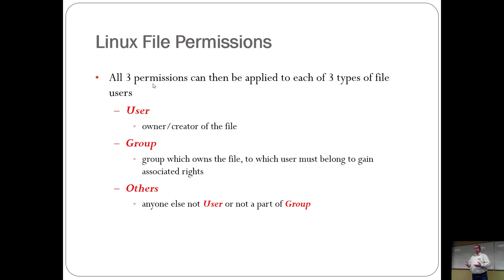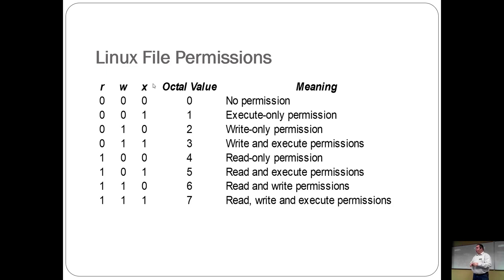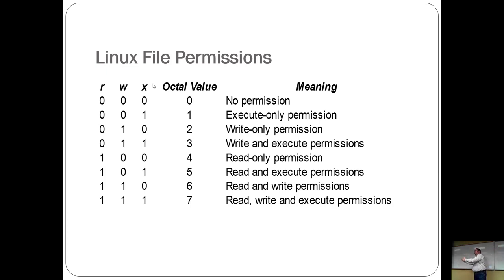Each three-bit set can be applied to the user, the group, and others. Before Linux, you used to have to know the octal values to set permissions. If you gave a file 655, that meant read/write permissions for the user, and read/execute permissions for both the group and others. You will be tested on what the octal values are.